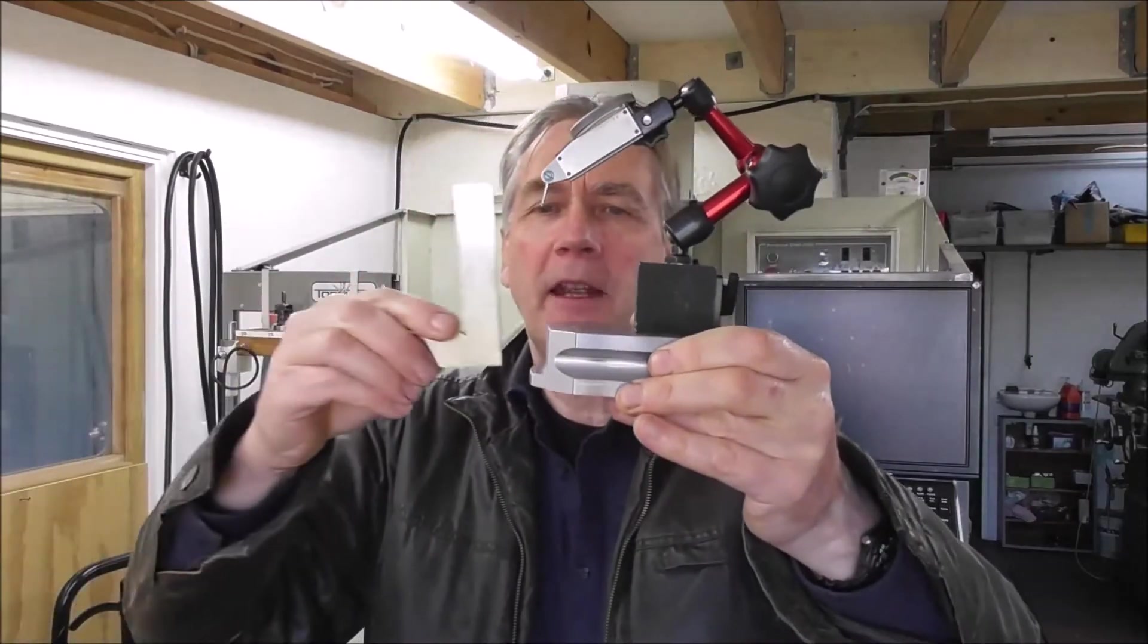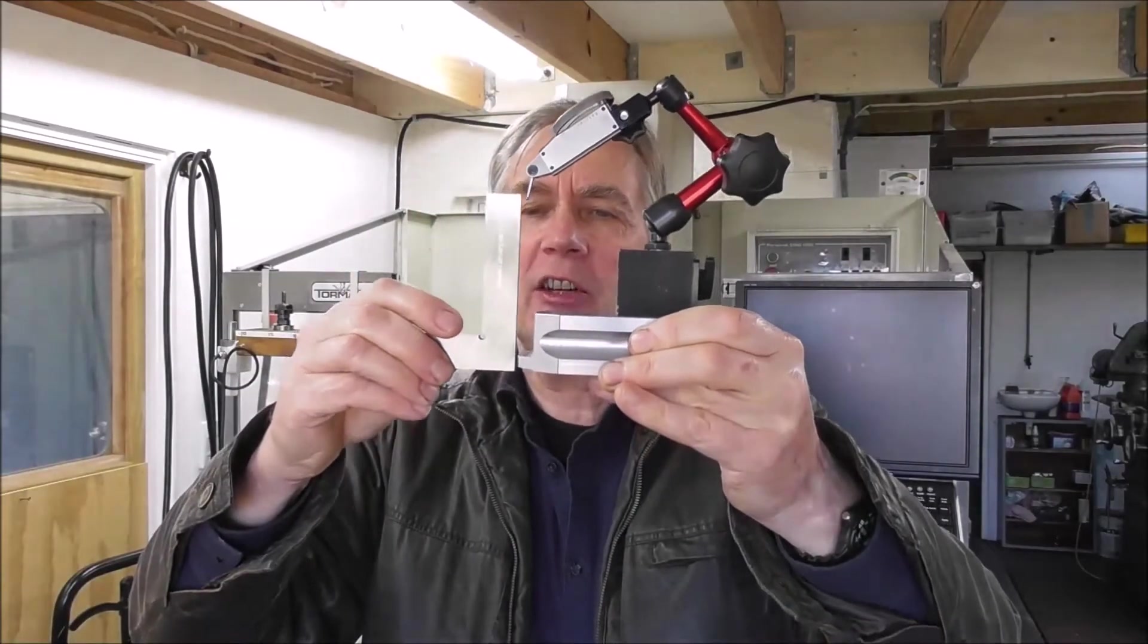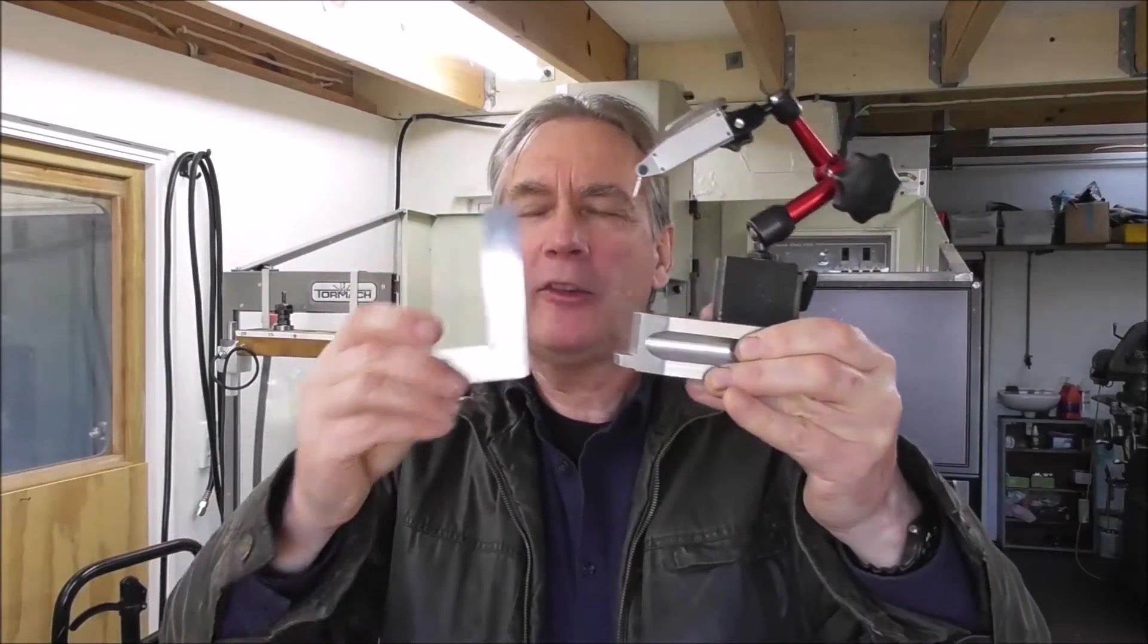A squareness comparator that you can use to accurately measure your squares, your vices, your angle plates, and not just see whether or not they're square but see how square they are, how close to 90 degrees they are.